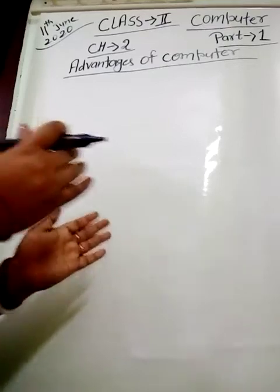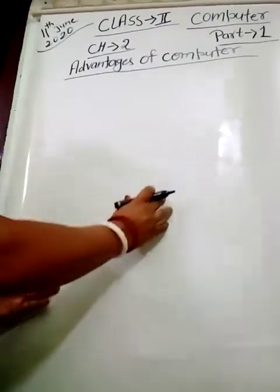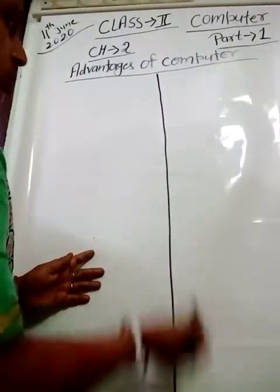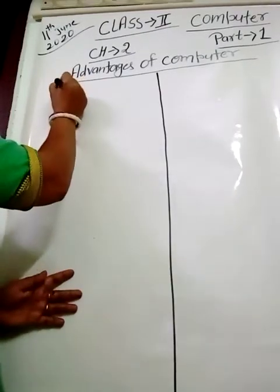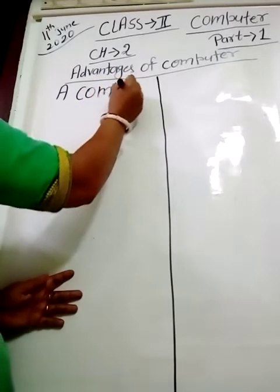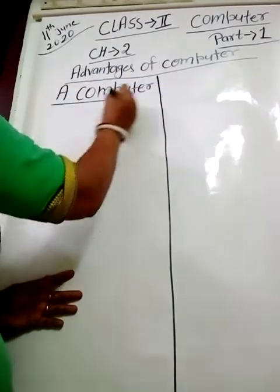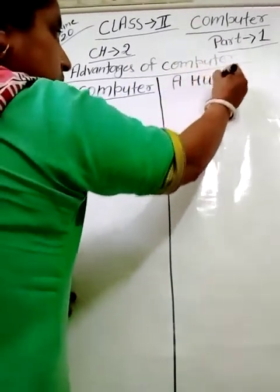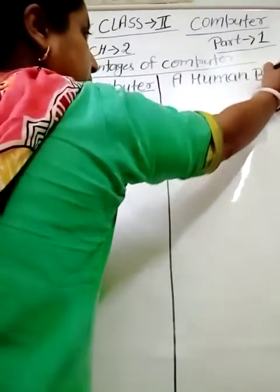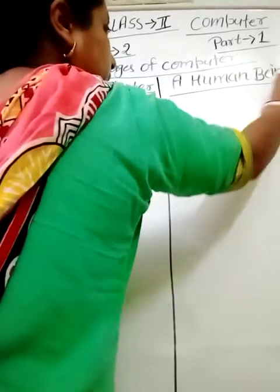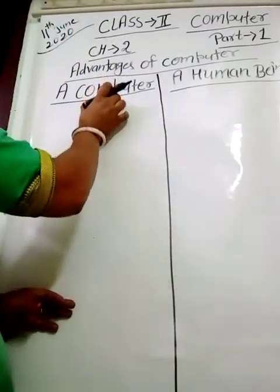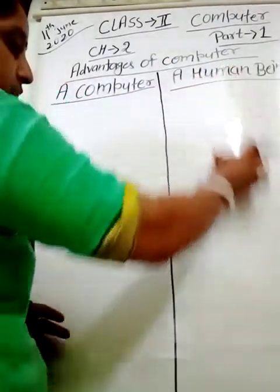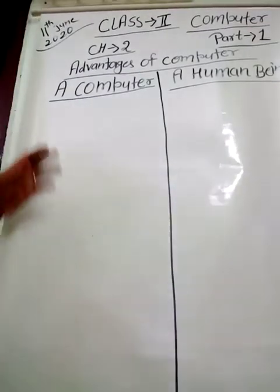So we are going to compare it with human beings — what are the differences between a human being and the computer. For that, I am making two columns. In the first column, I am writing 'computer,' and in the second column, I am going to write 'human being.' In the first column, I am going to write about the advantages of computer, comparing it with the human being.